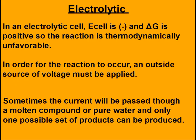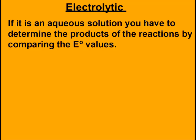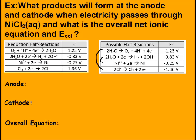In an electrolytic cell, E cell is negative and delta G is positive, so the reaction is thermodynamically unfavorable. An outside source of voltage must be applied for the reaction to occur. Sometimes current is passed through a molten compound or pure water where only one set of products can form. Most of the time it will be passed through an aqueous solution or a mixture, and you must determine the products by comparing E values.